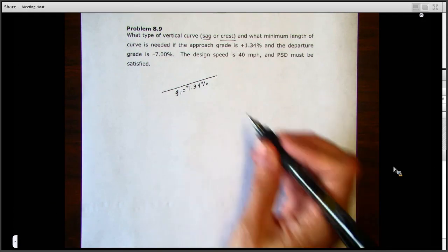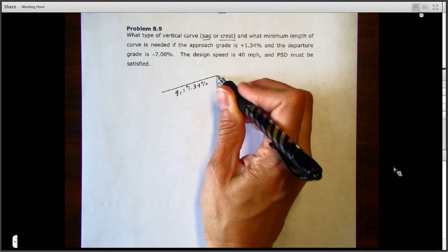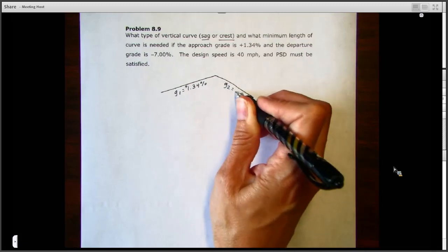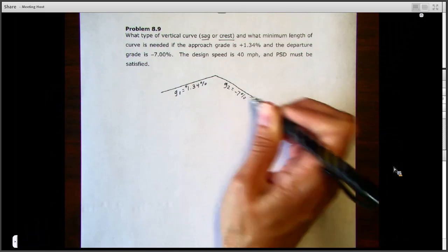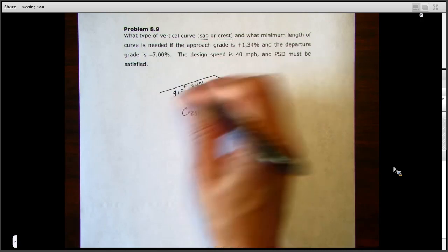And then our exit grade is steeper, it's going down and it's a minus seven percent, so my G2 is a minus seven percent grade. So that is a crest curve.